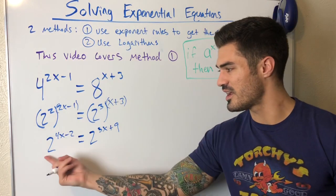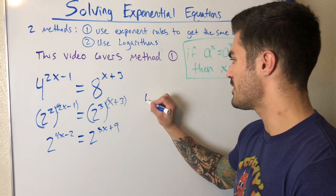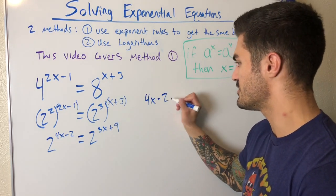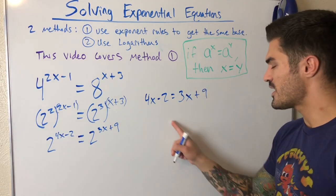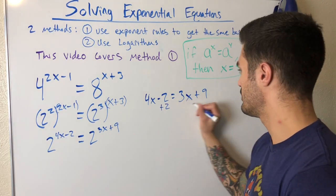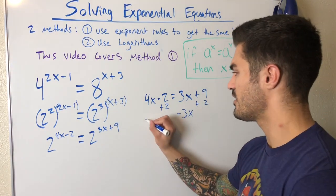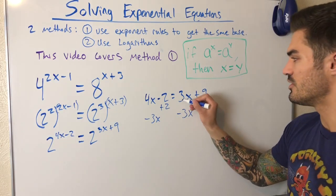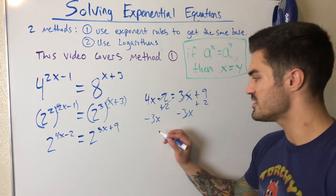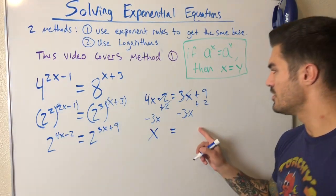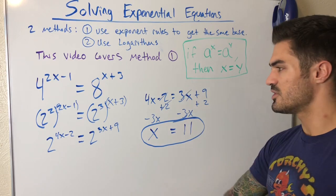So now I have what I need. I have the same base on both sides, each raised to some power. So I can say that these powers are equal to each other and I can solve for x. In this case, I actually just have one solution for x because there is no x squared terms. This is a linear equation at this point. I can add two to both sides and subtract three x from both sides. So now I have x equals eleven. So this is my solution for x to this exponential equation.